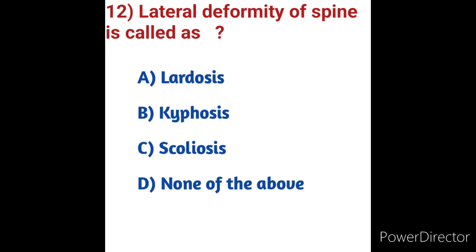Scoliosis is a spinal deformity consisting of lateral curvature and rotation of the vertebrae. Its causes include congenital, neuromuscular, syndrome-related, and idiopathic. It can also occur in people with cerebral palsy and muscular dystrophy. Scoliosis has two main types: levoscoliosis (spine curves to the left) and dextroscoliosis (spine curves to the right). Option C, scoliosis, is the correct answer.